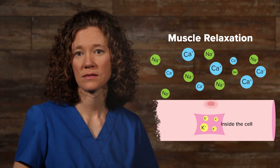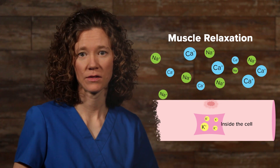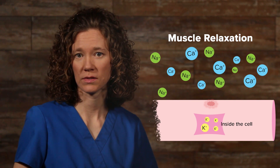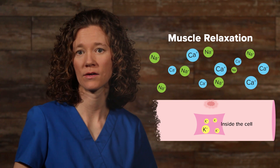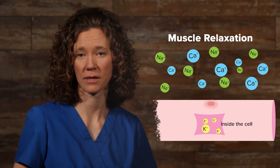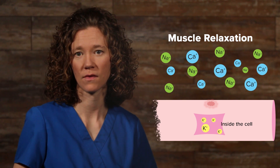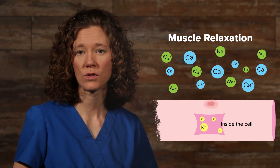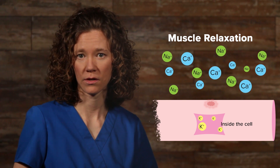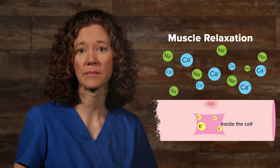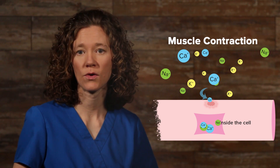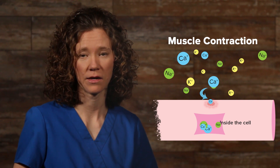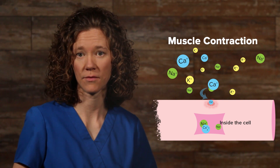When muscles are relaxed, potassium ions are in the muscle cell and calcium and sodium ions are outside the muscle cell. For muscle contraction to occur, the potassium ions leave the cell and sodium and calcium ions enter the cell.